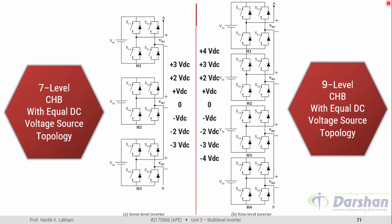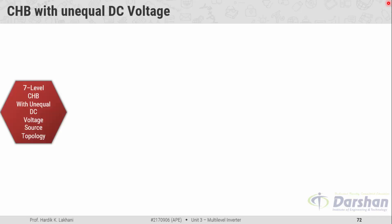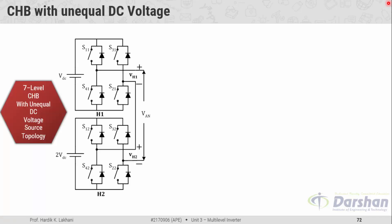For a seven-level CHB with unequal DC voltage, only two cells are required: H1 and H2. For the equal DC voltage seven-level CHB, we needed three cells H1, H2, and H3. So instead of using three cells, the purpose of producing a seven-level output can be achieved with the help of just two cells, and these are the same seven levels we can produce using this structure.